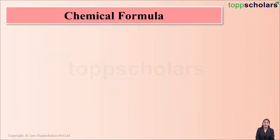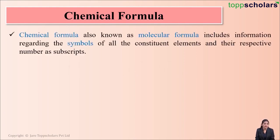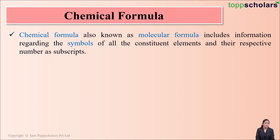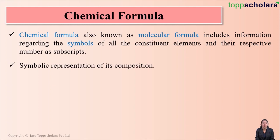Let's first start with chemical formula. What is a chemical formula? A chemical formula is also known as molecular formula, which includes information regarding the symbols of all the constituent elements and their respective number as subscripts. In simple terms, a chemical formula is a symbolic representation of the composition of a molecule.